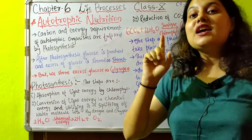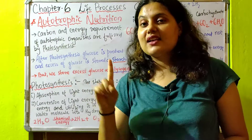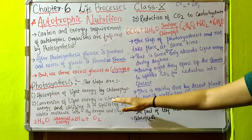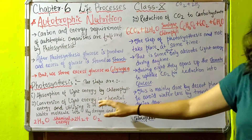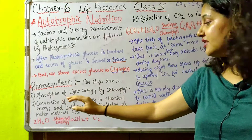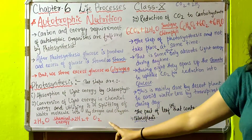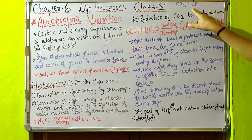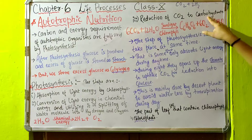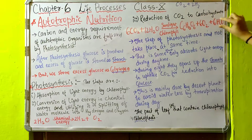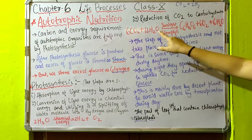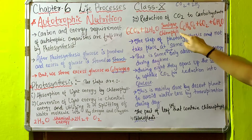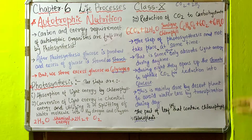The part of the leaf that contains the green pigment chlorophyll is known as the chloroplast. To recap the process of photosynthesis: the first step is absorption of light energy by chlorophyll; the second step is conversion of light energy to chemical energy, which is used to split water into hydrogen and oxygen; the third step is the combination of hydrogen with CO2 — reduction of CO2 into carbohydrate. The overall equation is: 6CO2 + 12H2O gives one molecule of glucose, six molecules of oxygen, and six molecules of water, in the presence of sunlight and chlorophyll.